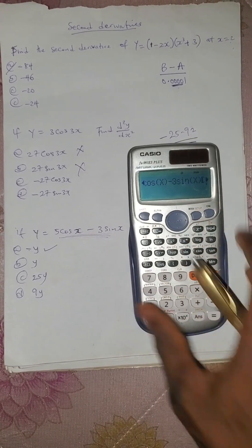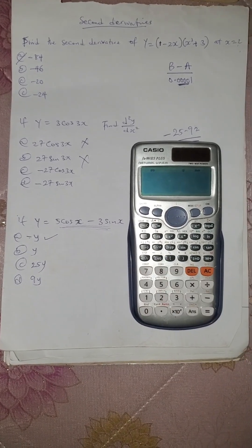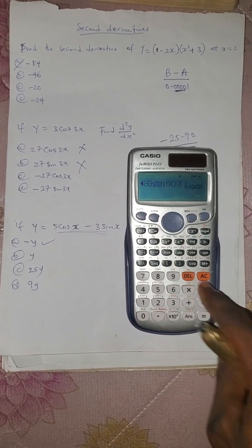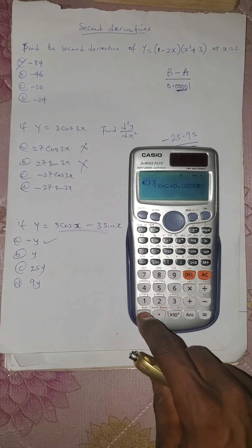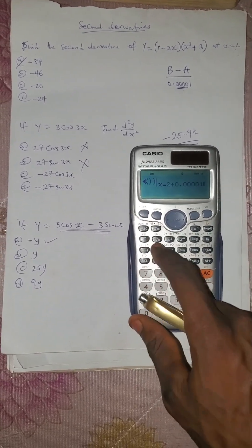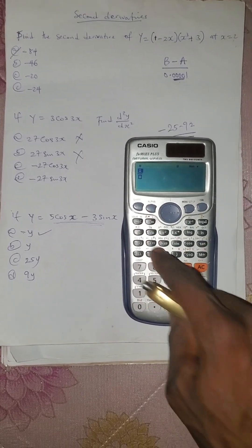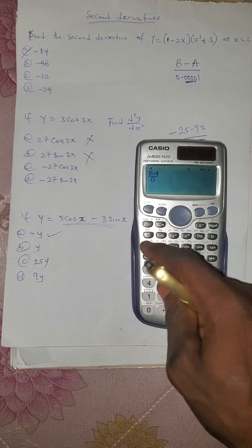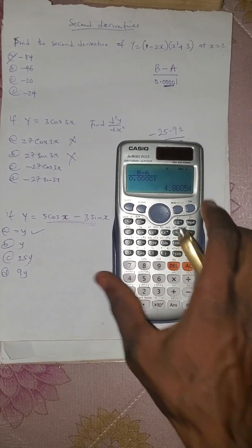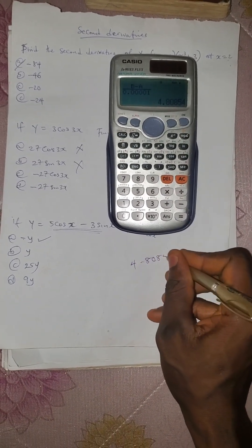Since we are not given x, we can insert x equals 2. Save this as A. Press backward direction, delete, come to the back, add the constant 0.0001 to it. Save this as B. After you are done, press AC.